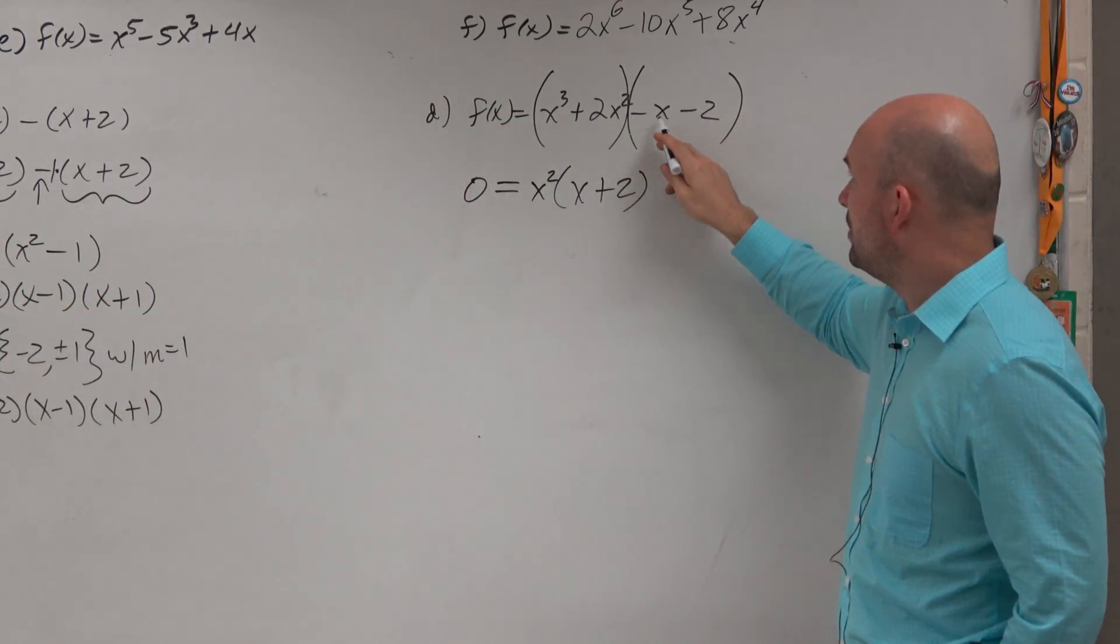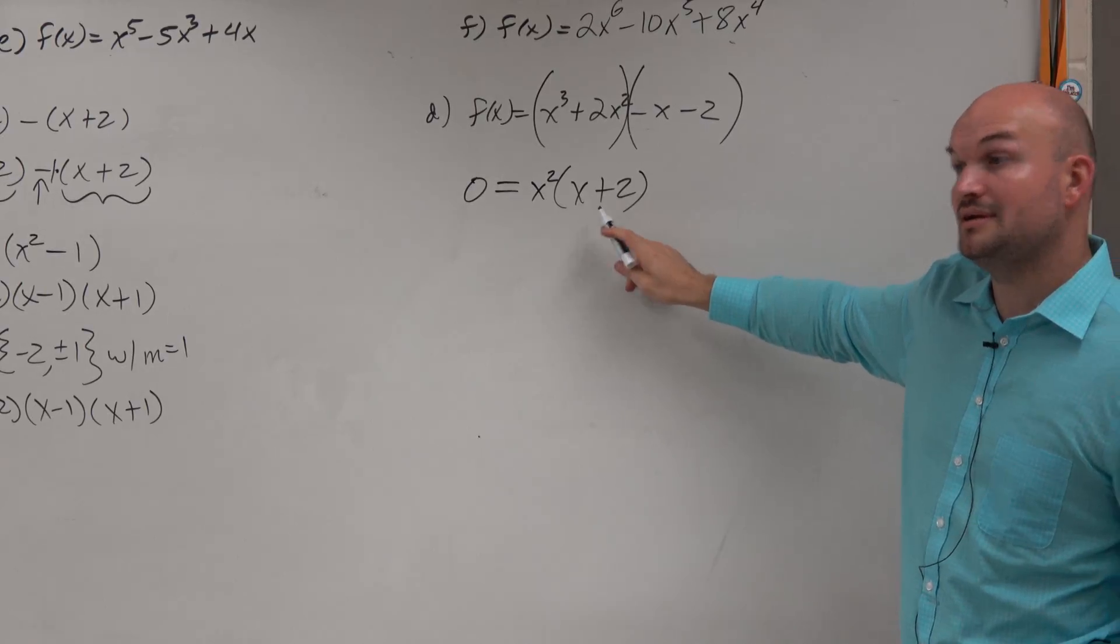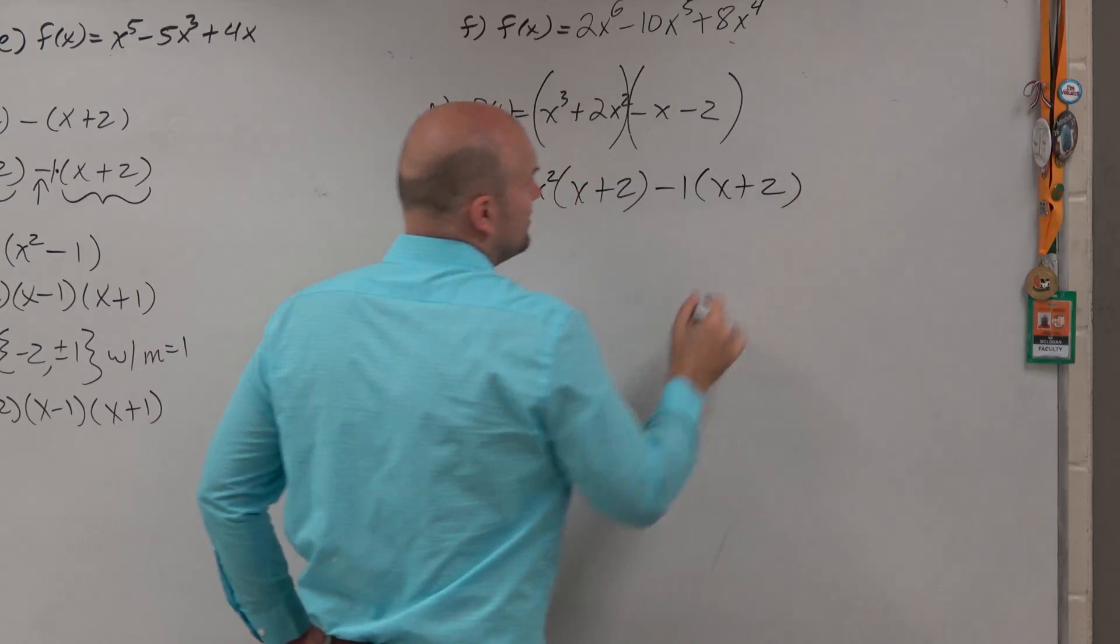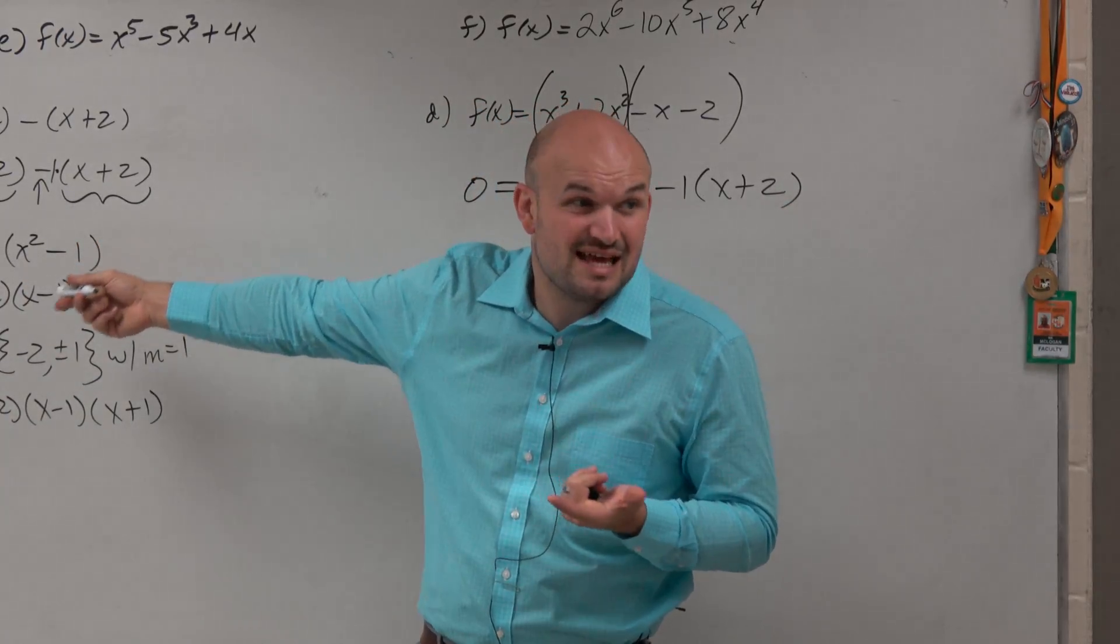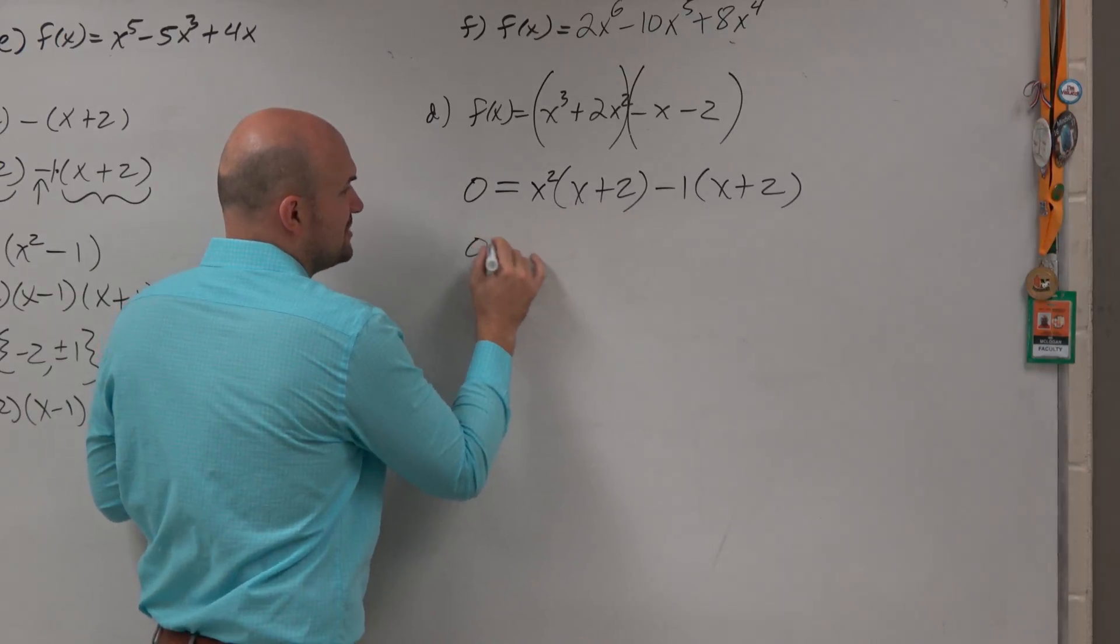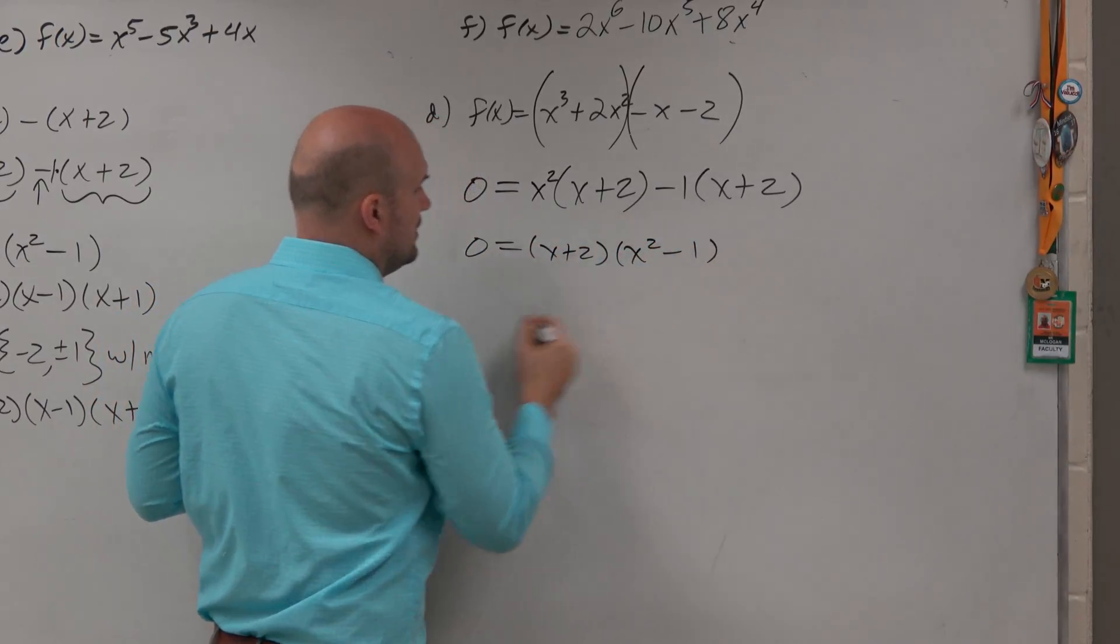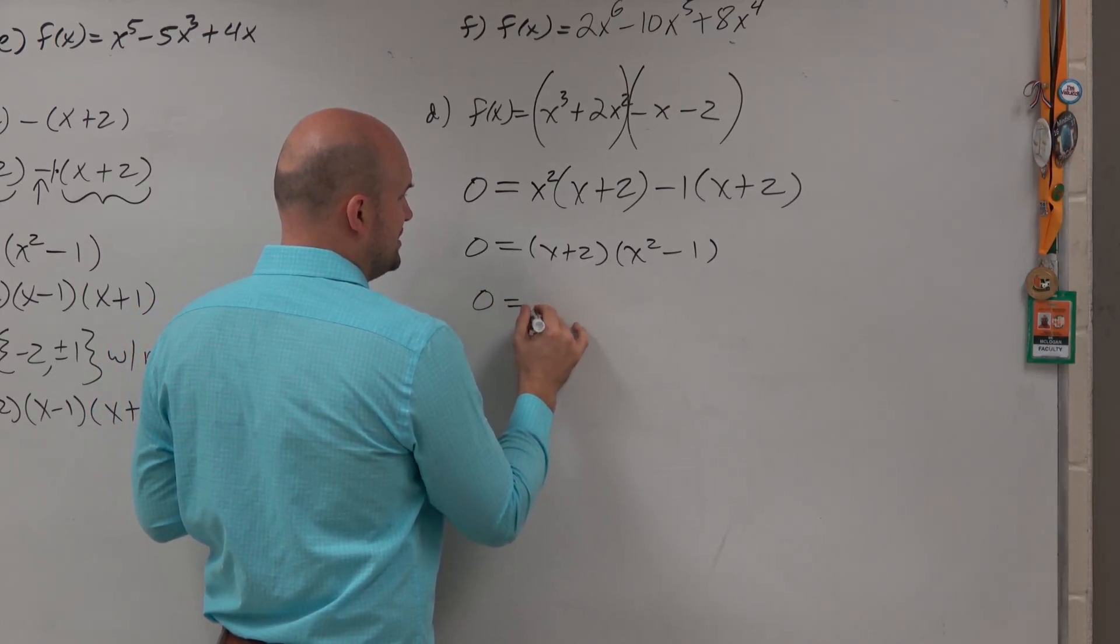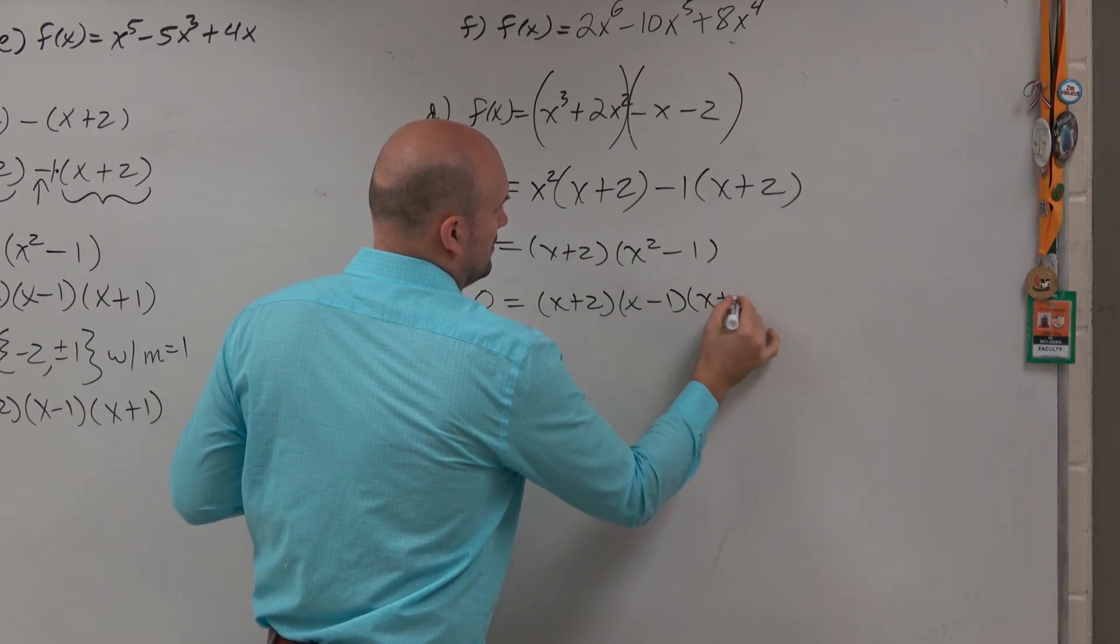So then I ask you, what do I need to factor out of this to make it x plus 2? Negative 1. And when you do that, look what this becomes. It's the same, right? So now we can factor out the (x + 2), and we can rewrite it as the linear factorization.